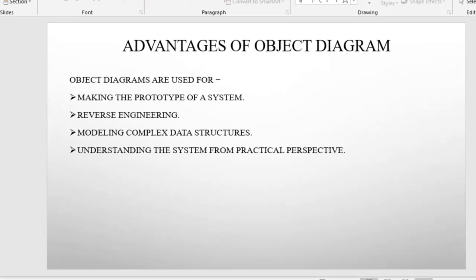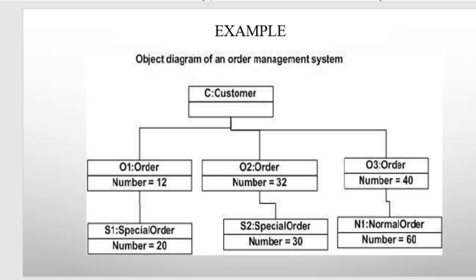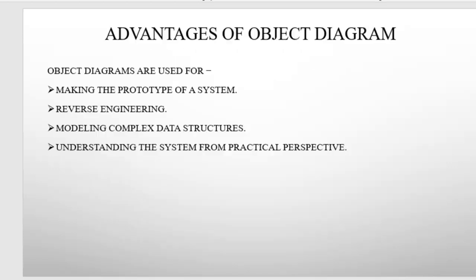These are the advantages of object diagrams. They are used to make the prototype of a system. The concept of an object is how the function performs. Reverse engineering can be used for this. Third is modeling complex data structures — if it is a complex data structure, it is modeled for the class diagram and we can extract the object diagram for understanding the system from a practical perspective.